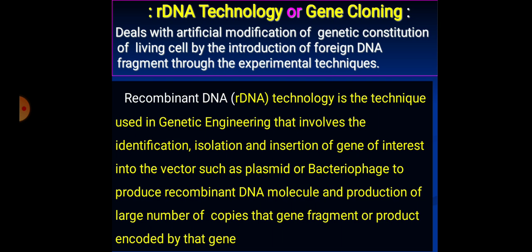R-DNA technology involves the identification and isolation of a gene of interest from the selected organism, then introducing the gene of interest into the vector, such as a plasmid or bacterial phage, to produce recombinant DNA. Then, production of a large number of copies of that gene — that is gene cloning — or making the gene express in the host cell.